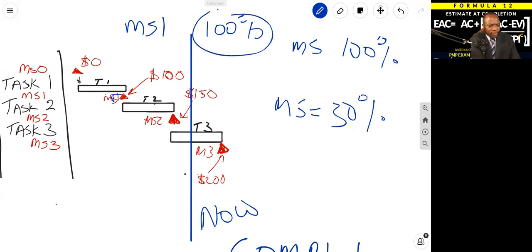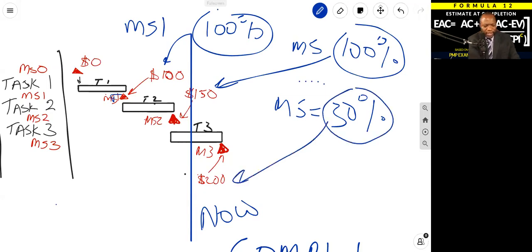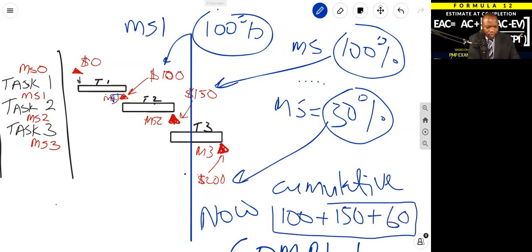Well, you need to multiply 100% of 100 is 100, 100% of 150 for milestone two is 150, 30% of 200 is 60. So you would have, at time now, cumulative earned value would be $100 plus $150 plus $60. That would be your earned value right now. And that would be earned value is $310.